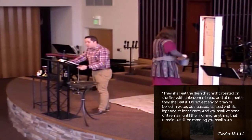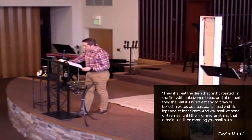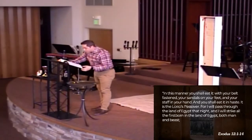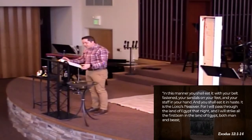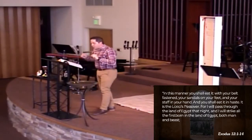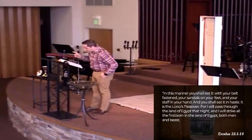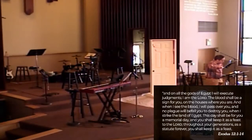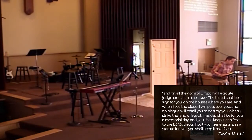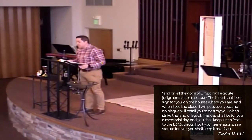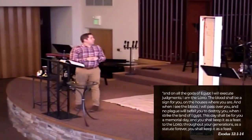They shall eat the flesh that night, roasted on the fire with unleavened bread and bitter herbs. Do not eat any of it raw or boiled in water, but roasted — its head with its legs and its inner parts. You shall let none of it remain until the morning; anything that remains until morning you shall burn. In this manner you shall eat it with your belt fastened, your sandals on your feet and your staff in your hand, and you shall eat it in haste. It is the Lord's Passover, for I will pass through the land of Egypt that night and I will strike the firstborn in the land of Egypt, both man and beast. And all the gods of Egypt I will execute judgments. I am the Lord. The blood shall be a sign for you on the houses where you are. And when I see the blood I will pass over you, and no plague will befall you or destroy you when I strike the land of Egypt. This day shall be for you a memorial and you shall keep it as a feast to the Lord. That is a reading of Exodus chapter 12 of the Passover.